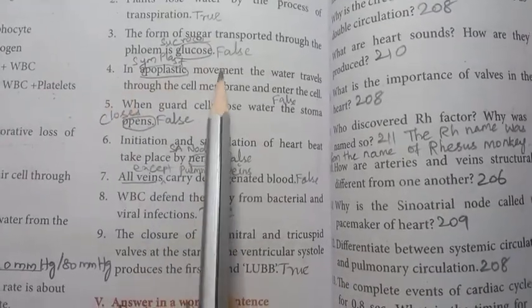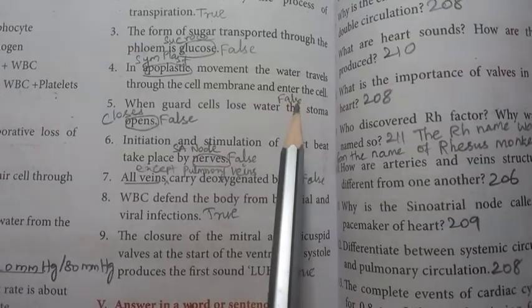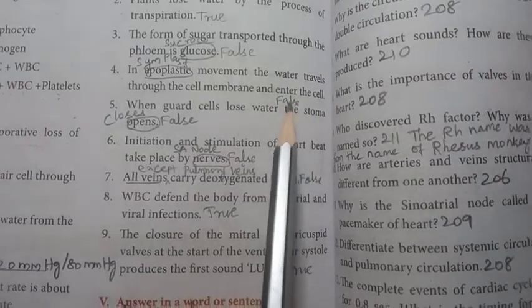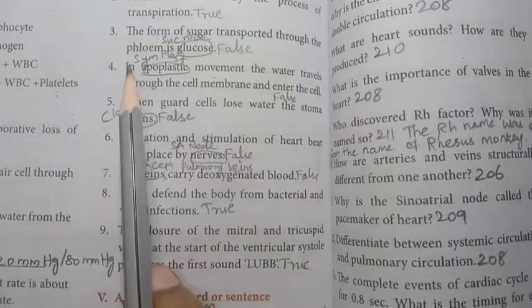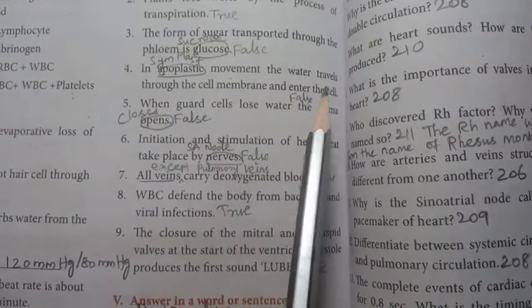Then four: in apoplastic movement, the water travels through the cell membrane and enters the cell. The statement is false. In symplastic movement, the water travels through the cell membrane and enters the cell.